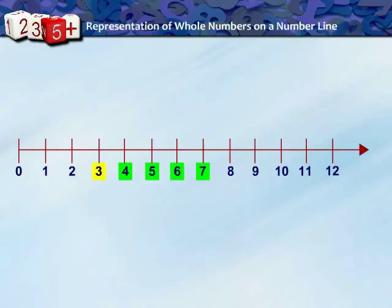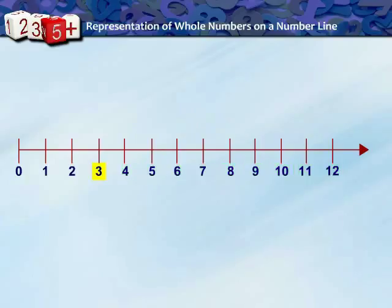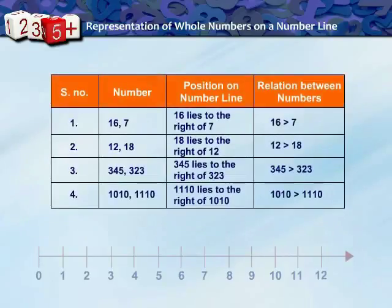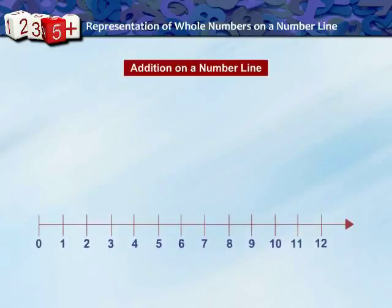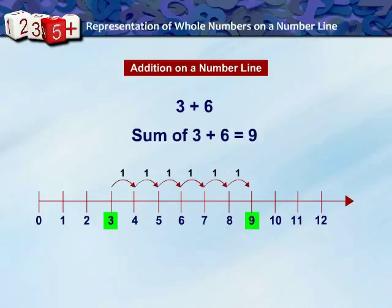The number lying on the right side of any number is its successor. All numbers lying to the right of a number are greater than that number. Addition of whole numbers can be represented on a number line. For the addition of 3 and 6, start from 3, make 6 jumps to the right, and we reach 9. So 3 + 6 = 9.